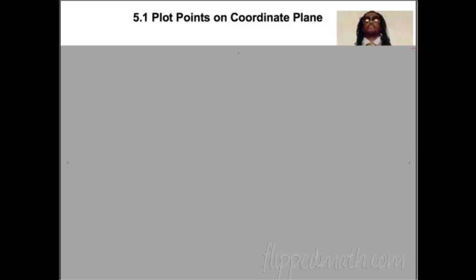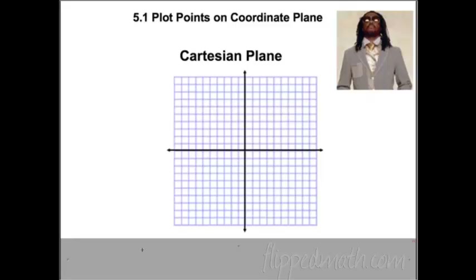5.1. This is Section 5.1: plot points on the coordinate plane. Let's talk about the Cartesian plane, named after the famous mathematician Descartes. It's our normal plane that you've probably plotted points on before. I want to make sure we have all the vocabulary we need, so please jot this down.